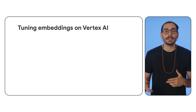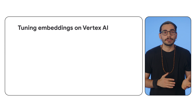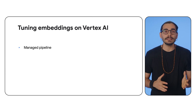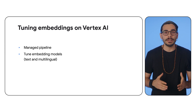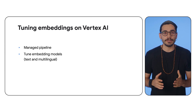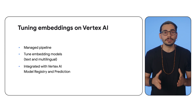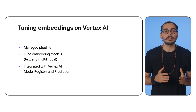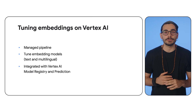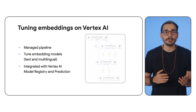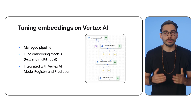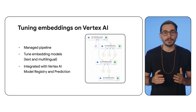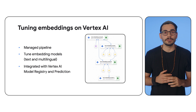Vertex AI simplifies embedding tuning. It provides a managed pipeline that automates the tuning process, registering your tuned model in the Model Registry. Then you can quickly deploy the tuned model in Vertex AI Prediction.